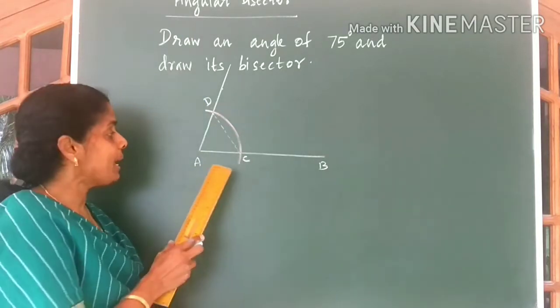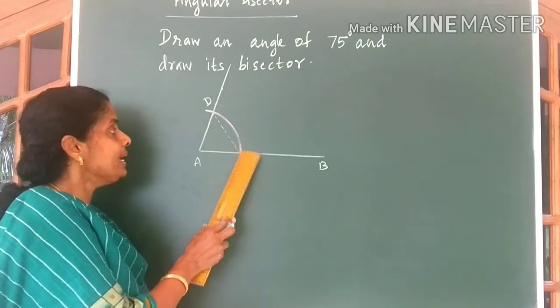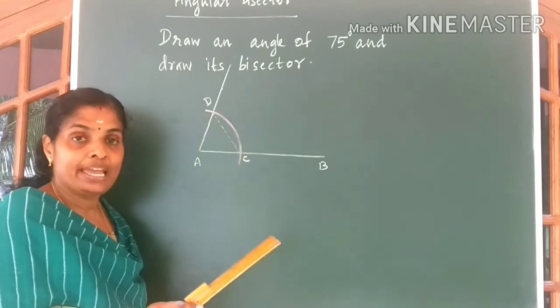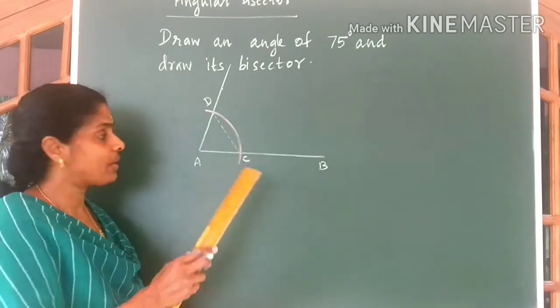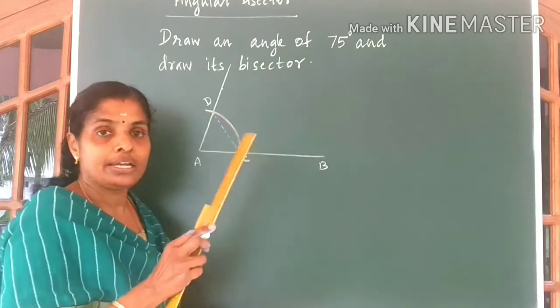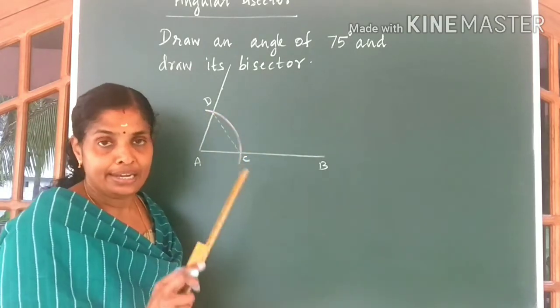Now what do you know about this triangle A, C, D? A, C, D will be an isosceles triangle. It is because AC and AD are equal in length.